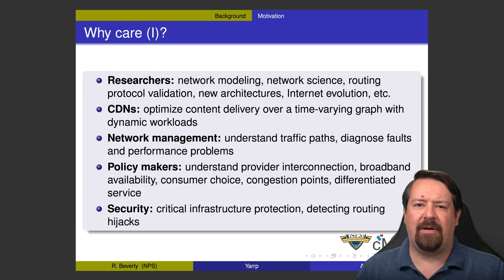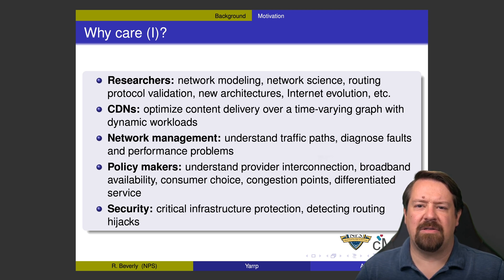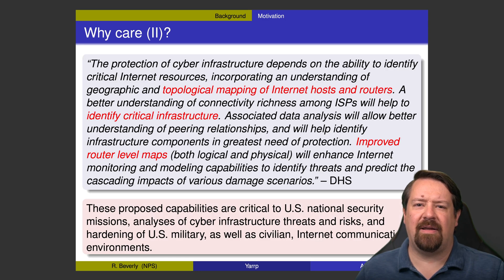Some of the reasons we care about the internet topology include research for those of us working on next generation protocols and architectures, as well as businesses such as CDNs that need to optimize their content delivery, folks managing networks trying to understand traffic and internet paths or troubleshoot problems, and those making policy affecting internet governance. Security impacts include detecting things like routing hijacks that show up as changes in internet topology. DHS considers understanding the internet topology to be a critical capability for internet security.